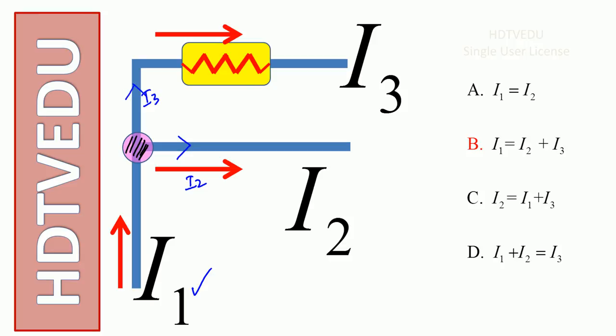What is the current entering? I1. So current entering equals current leaving. I1 equals I2 plus I3. So the answer is B.